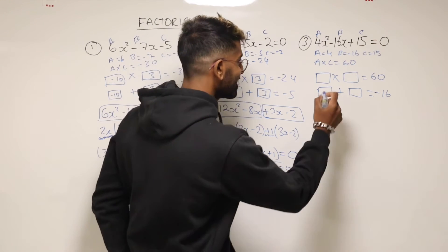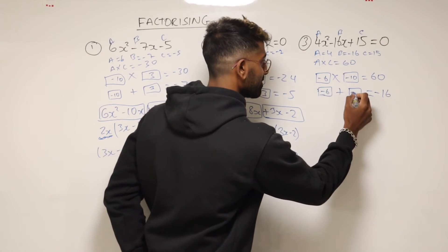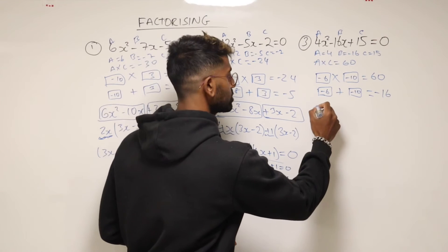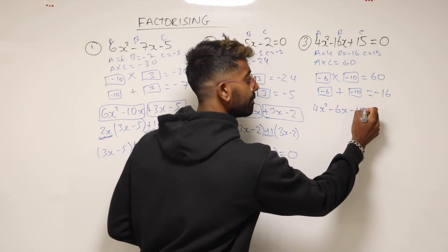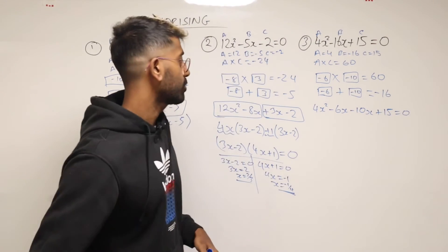Yeah, 6 and 10. Okay, so it's going to be minus 6 and minus 10. There you go. Minus 6 and minus 10. That works. Perfect. So then let's go and rewrite this. So we'll have 4x squared minus 6x minus 10x plus 15. Put that equal to zero.